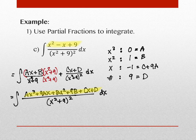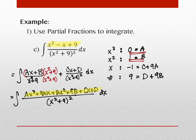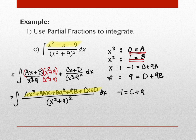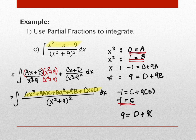Using B = 1 and A = 0: for the x-equation, −1 = C + 9(0), so C = −1. For the constant equation, 9 = D + 9(1), so D = 0. I have all four values. So the integral becomes: (0·x + 1)/(x² + 9) + (−1·x + 0)/(x² + 9)² dx = 1/(x² + 9) − x/(x² + 9)² dx.